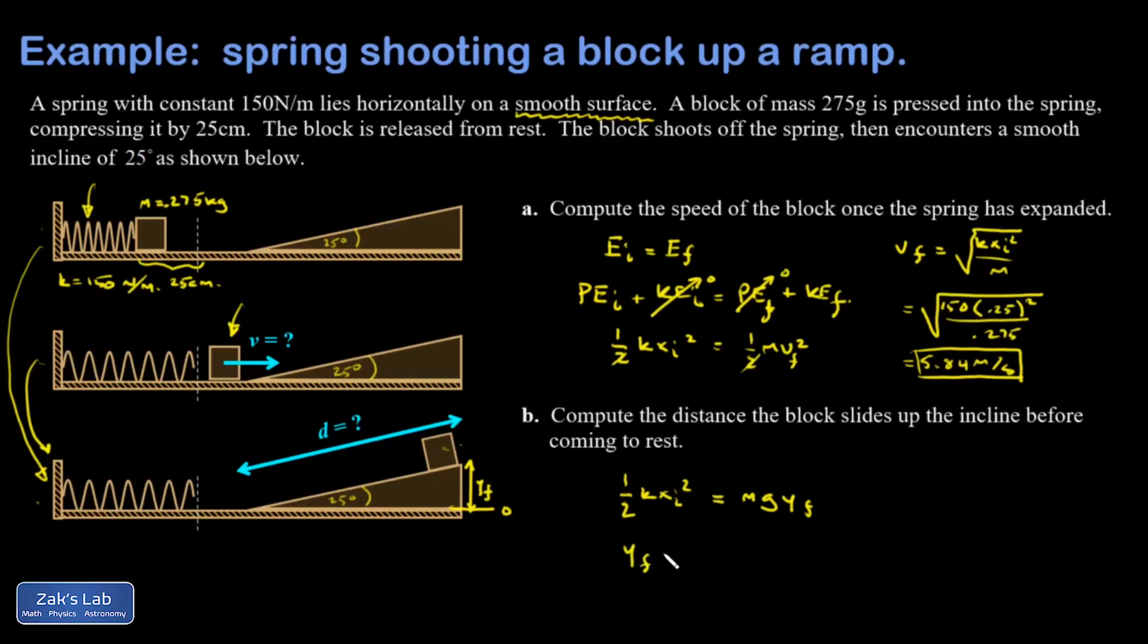I can go ahead and solve for y final symbolically. It's kx initial squared over 2mg. So 150 times 0.25 squared over 2 times 0.275 times 9.8. And I get for y final 1.74 meters.